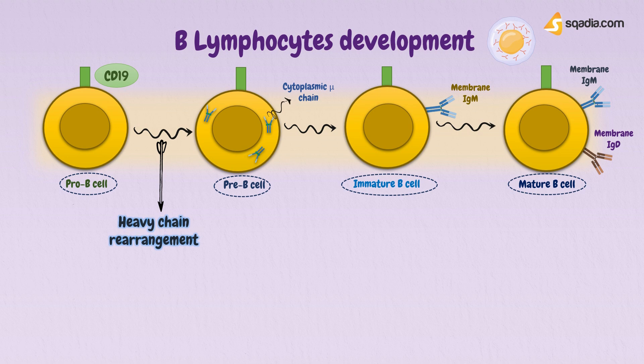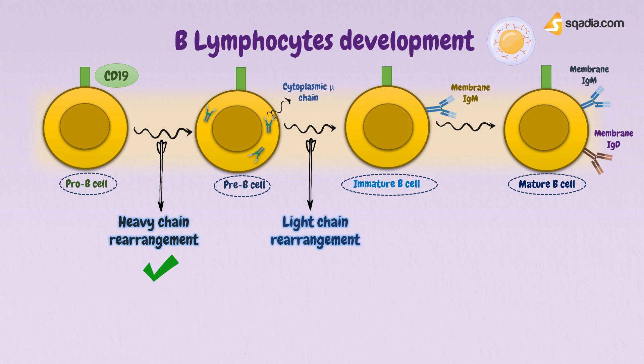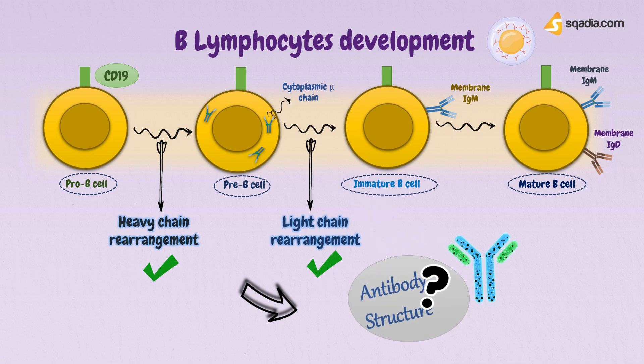At the level of the pro-B cell, heavy chain rearrangement takes place, converting it to a pre-B cell. Then at that stage, light chain rearrangement takes place and it gets converted to an immature B cell. So this was all about the development of B lymphocytes. During this development, two types of gene rearrangements occur: one in the heavy chain and another in the light chain. To understand in depth about these recombinations and how they lead to diversification, let's briefly revise antibody structure in our next section.